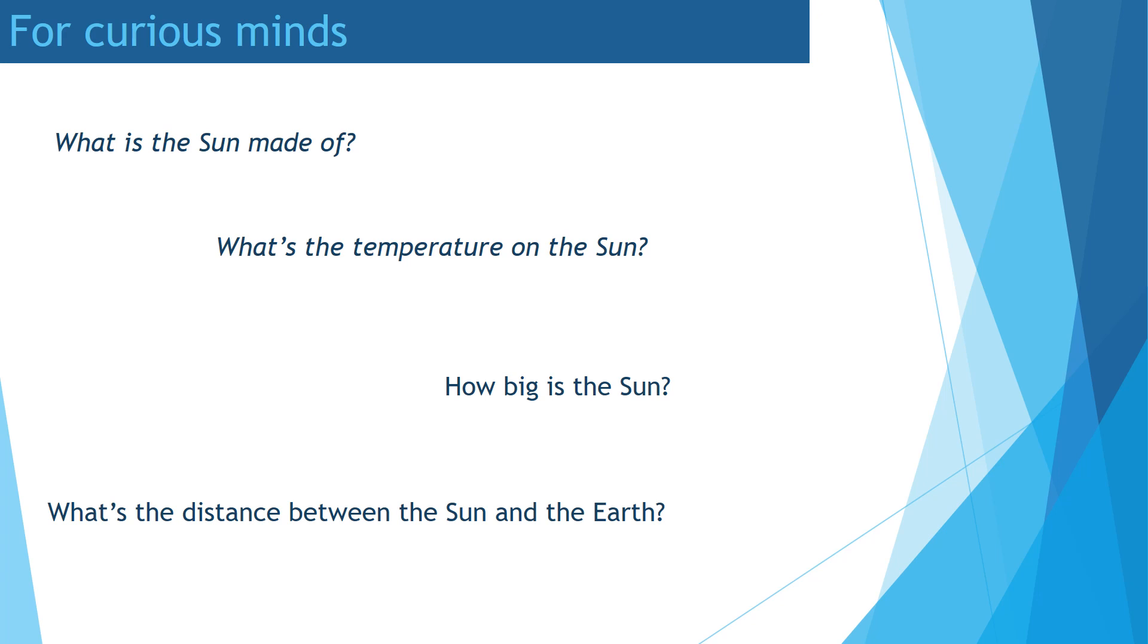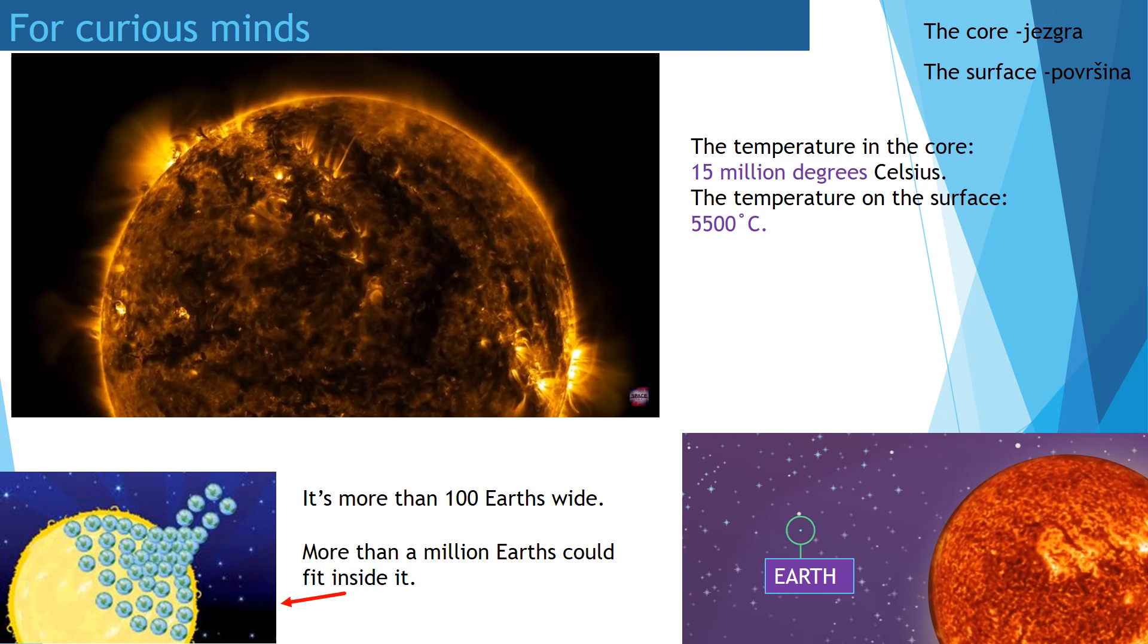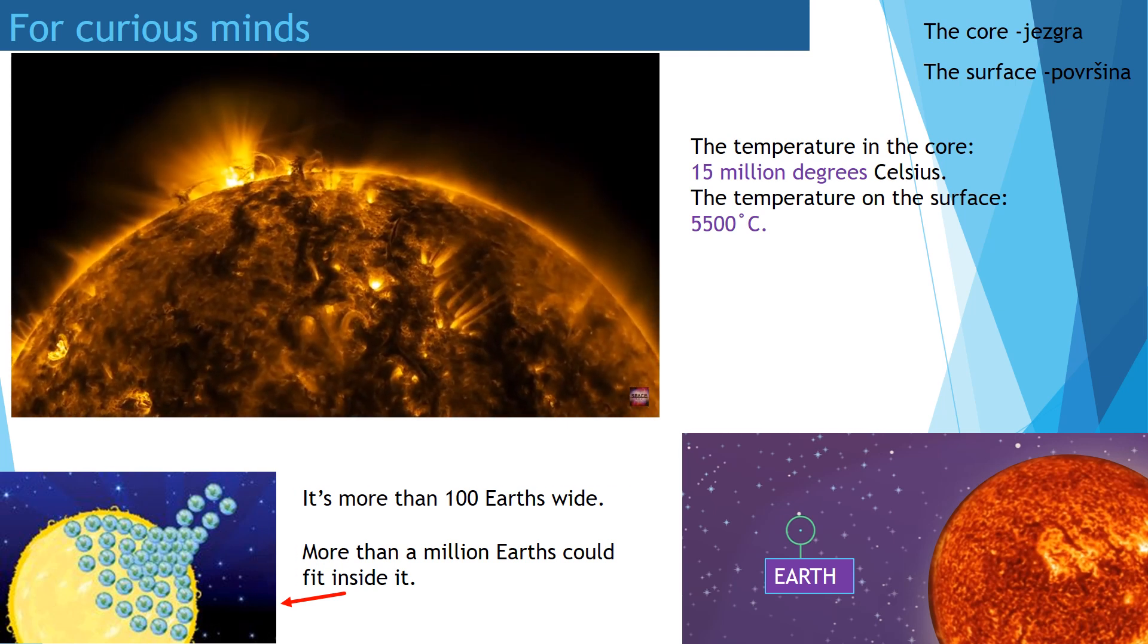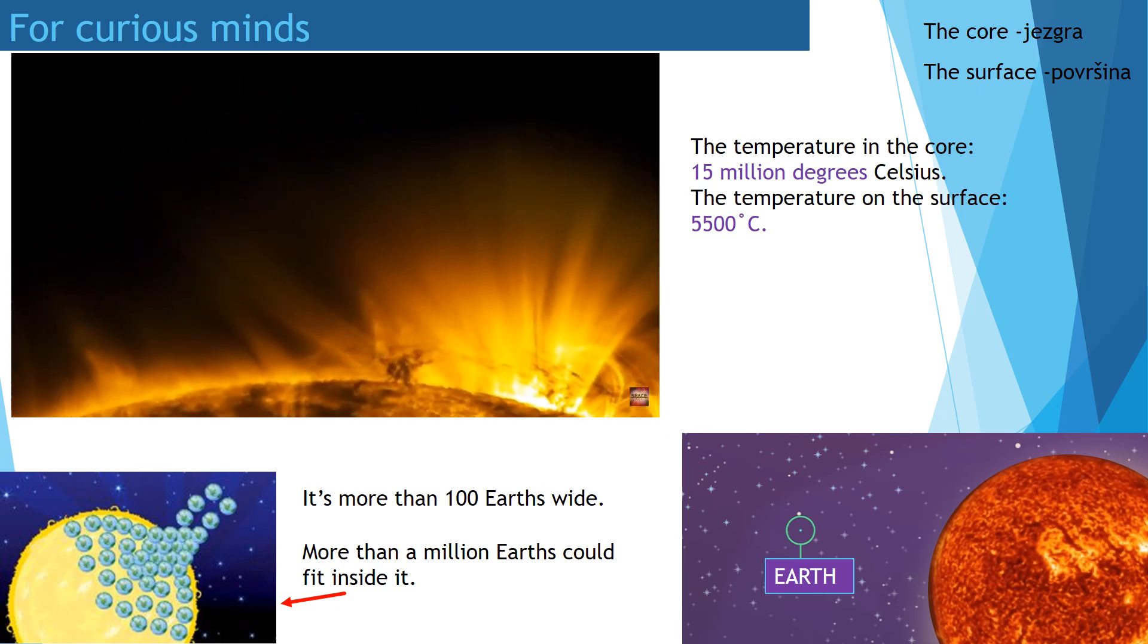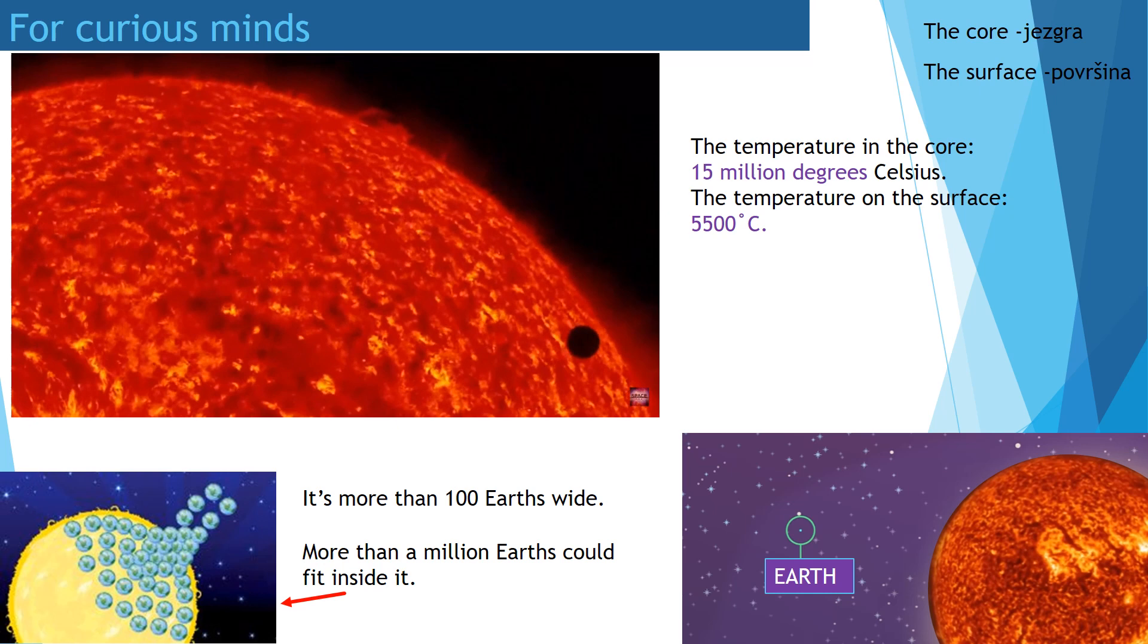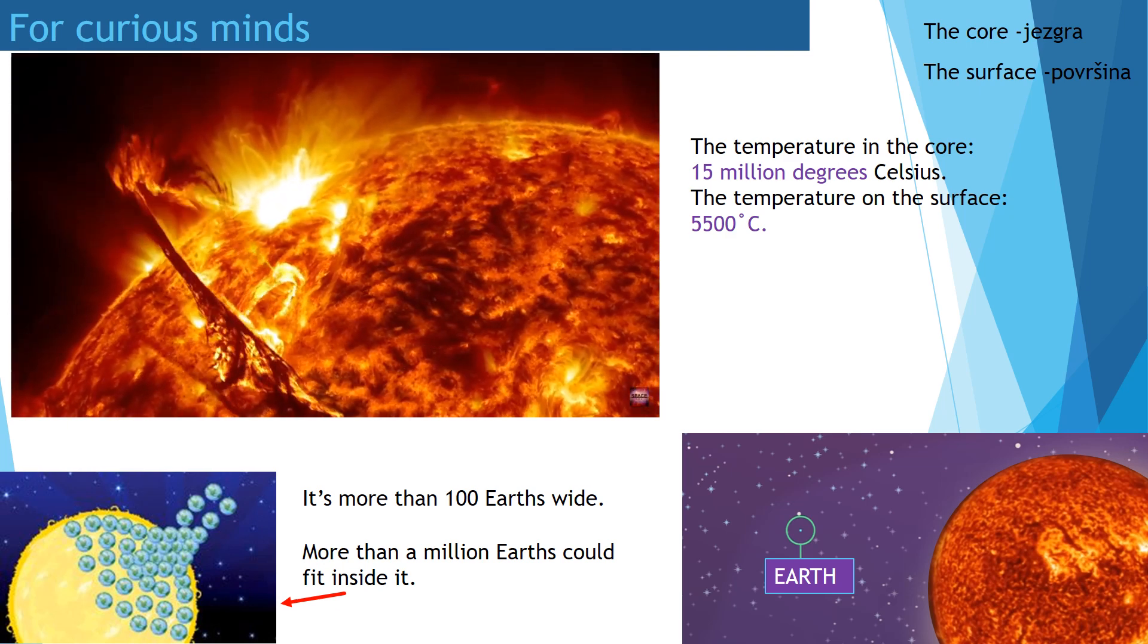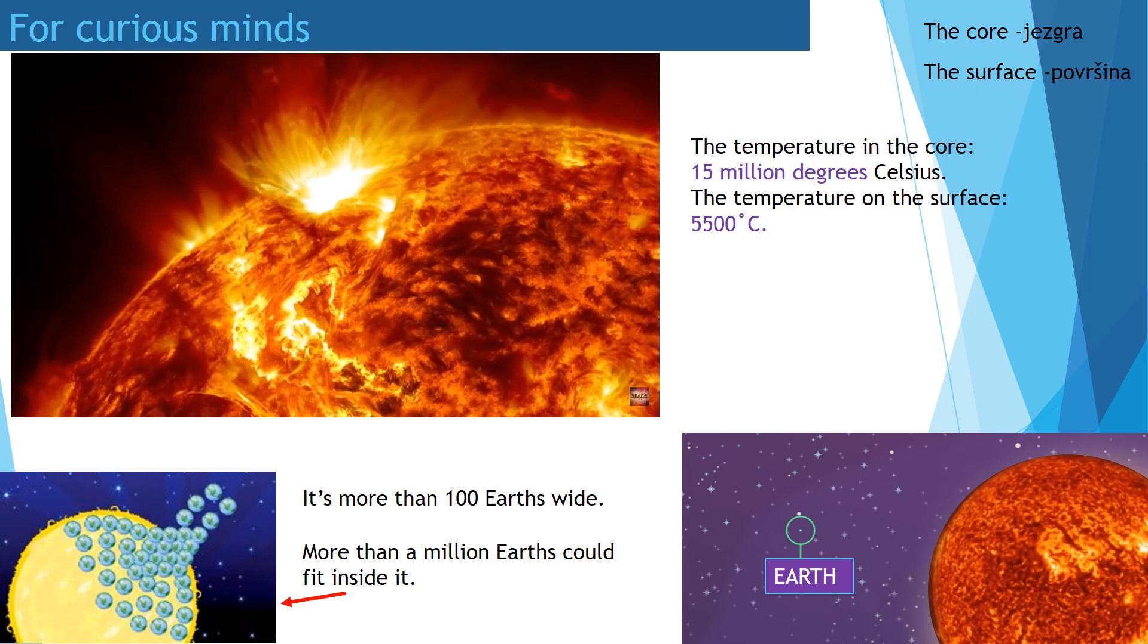And now something for curious minds. Do you know what is the sun made of? What is the distance between the sun and the Earth? Let's find out! And now something for curious minds. This is the sun taken by NASA. The temperature in the core is 15 million degrees Celsius, and the temperature on the surface of the sun is 5500 degrees Celsius. So, as you can see, it's very, very hot.